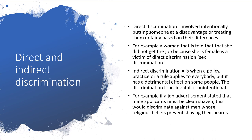Then there is indirect discrimination, which isn't always easy to spot. It's when a policy, practice or rule applies to everybody, but it has a detrimental effect on some people. The discrimination is accidental or unintentional. For example, if a job advertisement stated that male applicants must be clean shaven, this would discriminate against men whose religious beliefs prevent shaving their beards off.